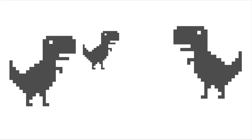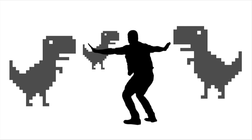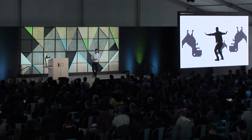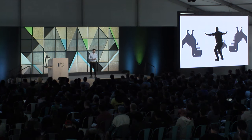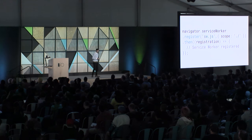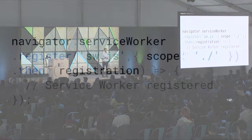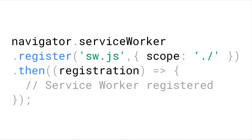At I/O, we're talking about killing the offline dinosaur. Ideally, we want to build experiences where you're no longer having to play that game — you're actually giving a user something valuable. The underpinning of this is Service Worker. It's basically a script that runs in the background, separate from your page, responds to events like network requests, and gives you the ability to define really well-crafted offline experiences.